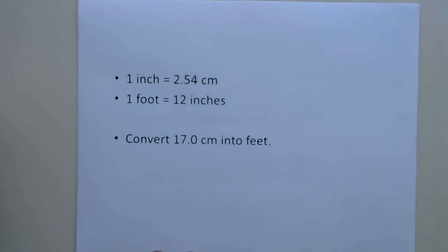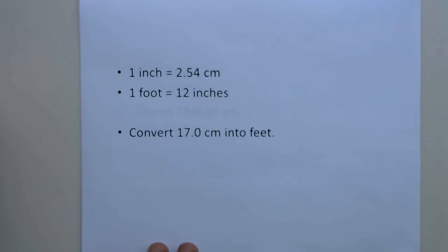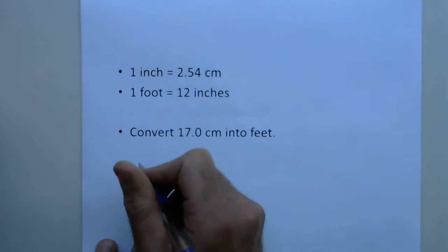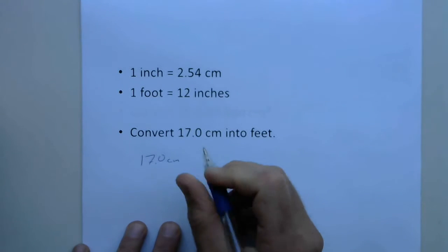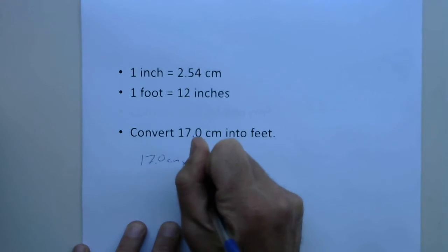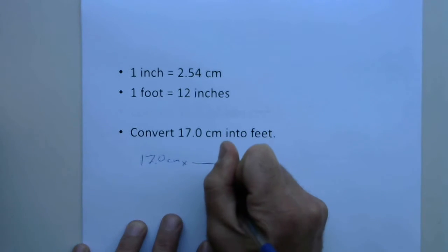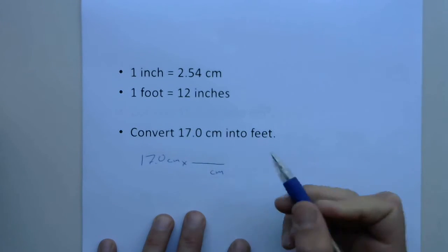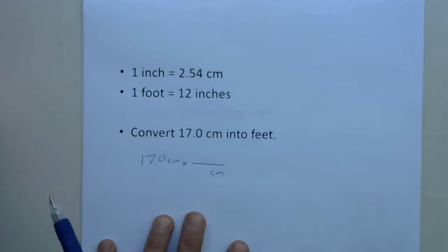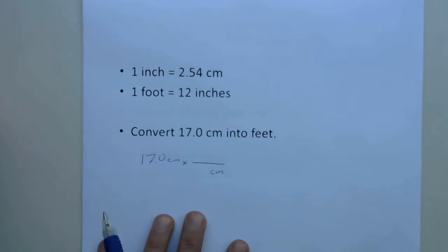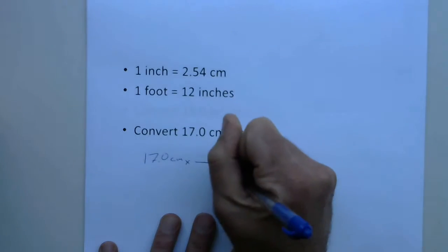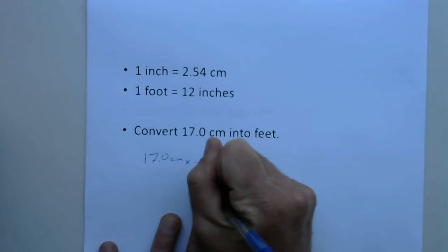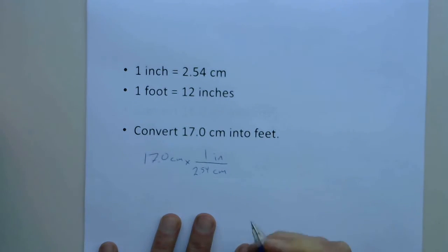Let's look at another one. Some of these problems take more than one step. We're trying to convert 17 centimeters into feet. We'll start by writing out what we have: 17.0 centimeters, including the units. I want to convert centimeters into feet, but I don't really know a conversion factor that goes directly from centimeters to feet. However, I do know how to convert centimeters into inches. So we'll put inches on top, centimeters on the bottom. There are 2.54 centimeters in every one inch. The centimeters cancel out, giving us inches — and now we're closer to where we need to be.